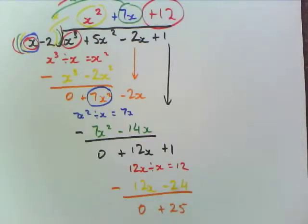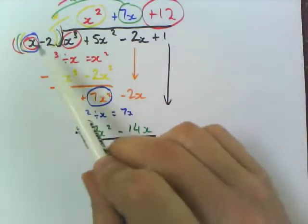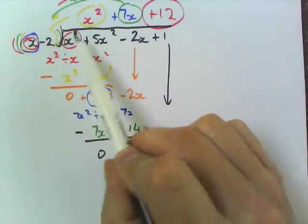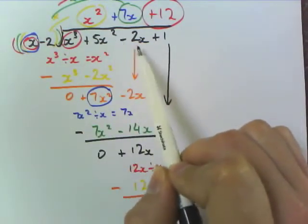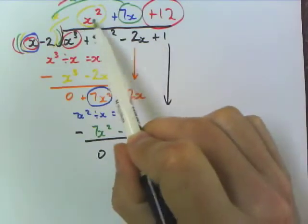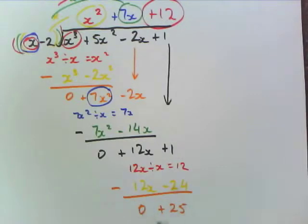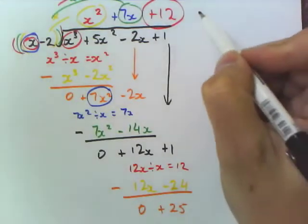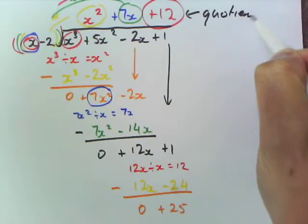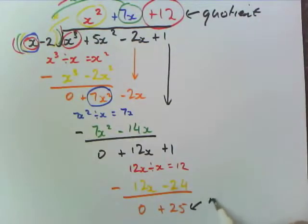What this means is that x minus 2 goes into x cubed plus 5x squared minus 2x plus 1, x squared plus 7x plus 12 times with a remainder of 25. This here is called the quotient. And this here is the remainder.